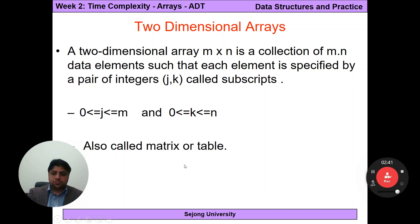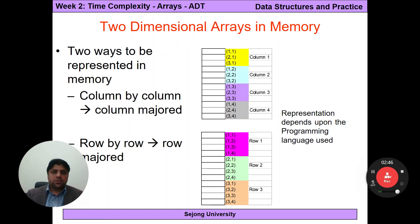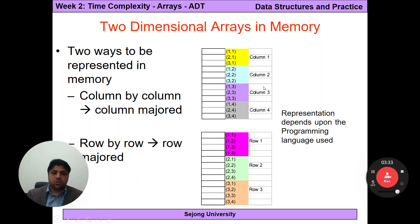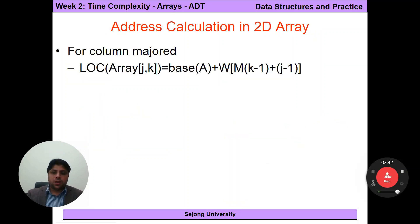Two-dimensional arrays can be row-major or column-major. In column-major order, we go first row first column, second row first column, third row first column — dealing column by column. In row-major order, we go first row first column, first row second column, first row third column — dealing row by row. The representation in memory depends on the programming language.